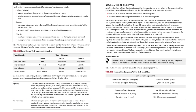Table 16.1 shows in broad terms the four major kinds of securities and evaluates them in terms of the three primary investment objectives. Note that for our purposes, the evaluation in the table disregards the effects of inflation.